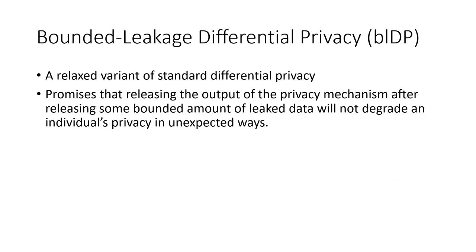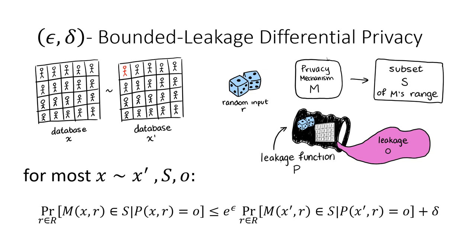Intuitively, bounded leakage differential privacy promises that releasing the output of a privacy mechanism after releasing some bounded amount of leaked data will not degrade an individual's privacy in unexpected ways. Formally, this looks pretty similar to the definition of differential privacy. We still have two neighboring databases X and X prime, a random input R, and a privacy mechanism M. But in addition, we consider some leakage function P, that takes in the randomness of the mechanism and the database and outputs some leakage O.